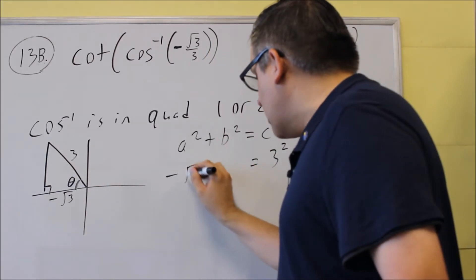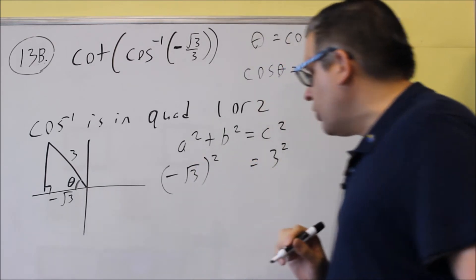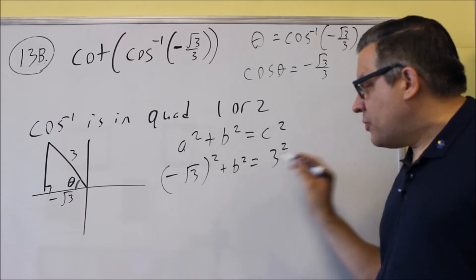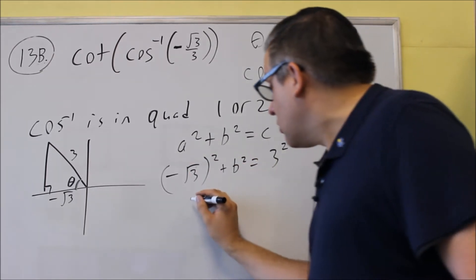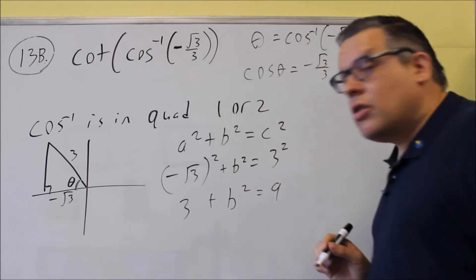And then, a and b doesn't matter which one, so we'll put that there. So, negative square root of 3 squared plus b squared equals 3 squared. We'll square this so we'll get rid of the negative and the radical, leaving it with 3. This one over here gives you 9.